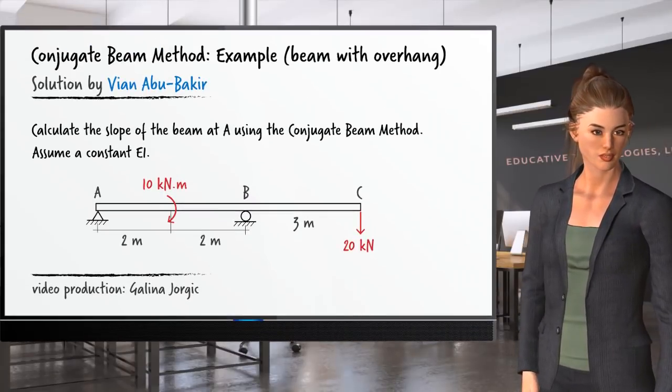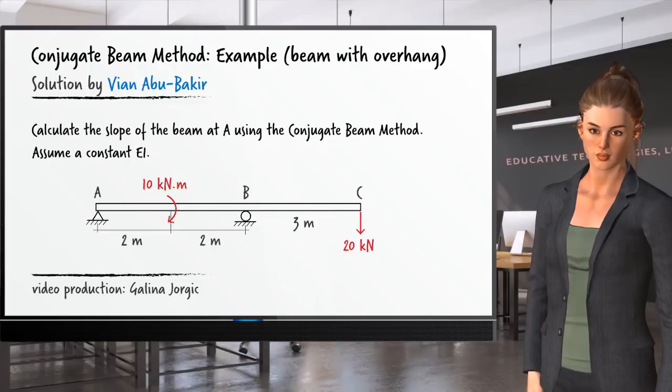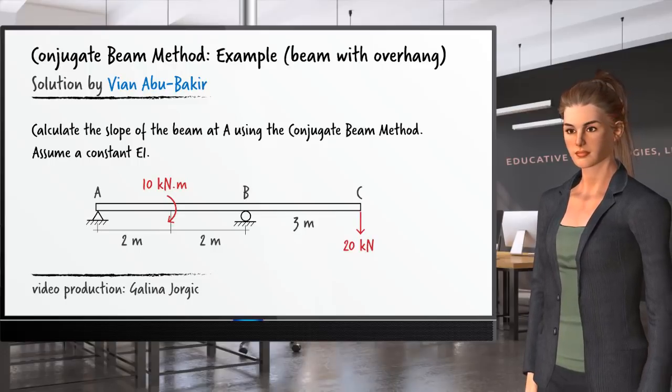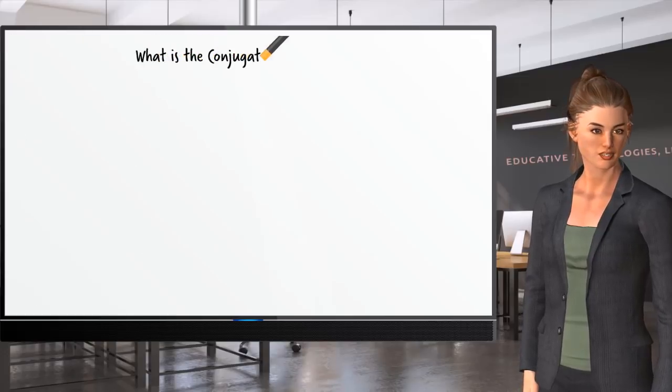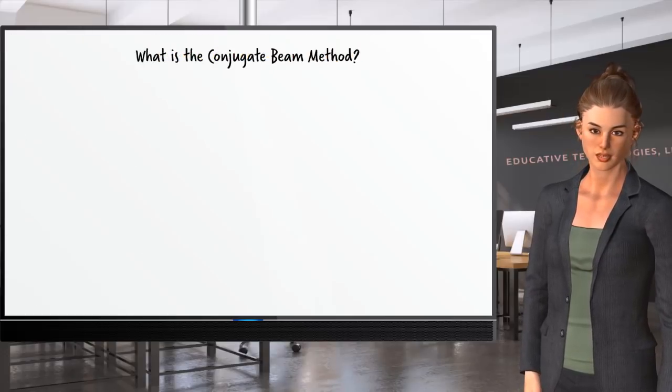In this video, I'm going to explain how to calculate the slope of this beam at point A using the conjugate beam method. Let's start by outlining the steps involved in using this method.